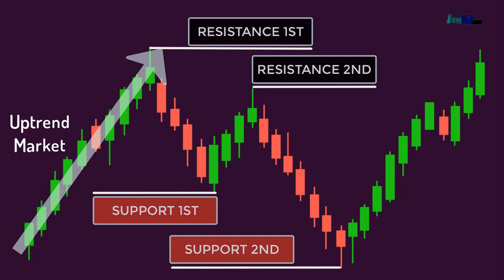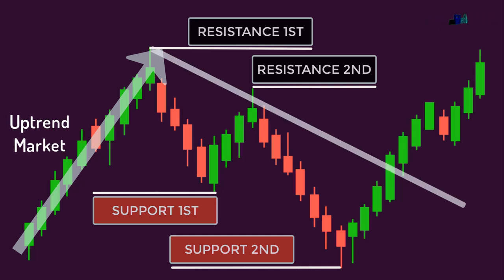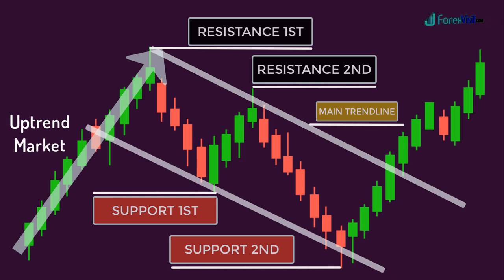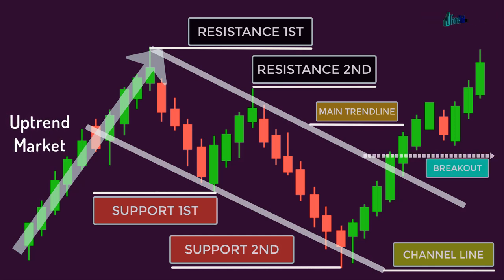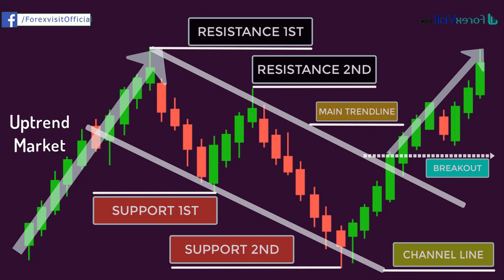Now we draw a trend line touching the highs of both resistances — this is called the main trend line. Then we draw another trend line touching the lows of both supports — this is called the channel line. In a bullish continuation channel pattern, at least two resistances and two supports must be formed, and both trend lines must be parallel to each other. When a candle breaks above the resistance line, the pattern is completed and the bullish trend resumes. At breakout, volume also starts increasing.